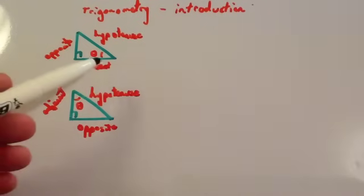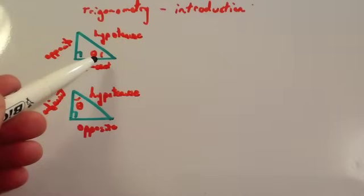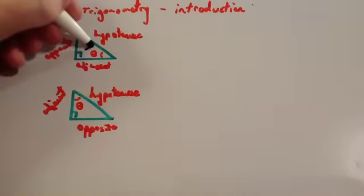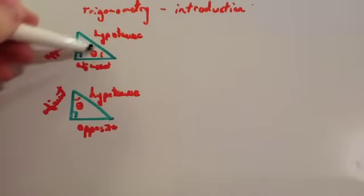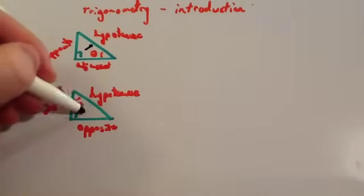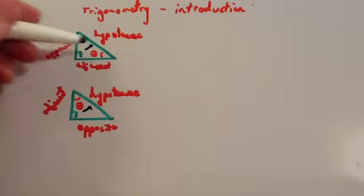If we've got a right-angled triangle and we're considering this angle here, the bottom right-hand corner, the largest side is always the hypotenuse. It's the one opposite the right angle. In both of these triangles, the side opposite the right angle is called the hypotenuse.